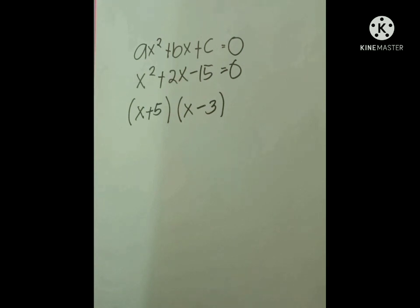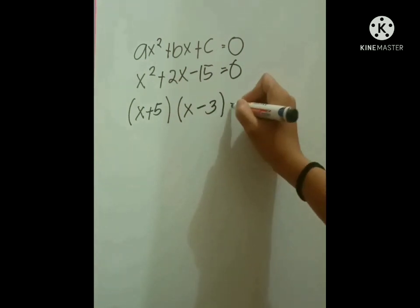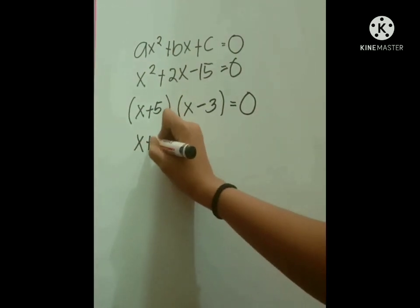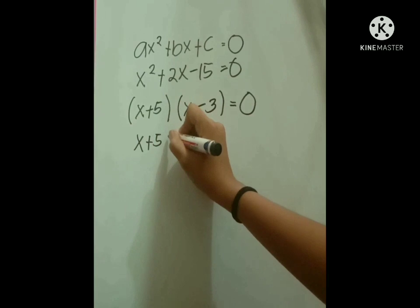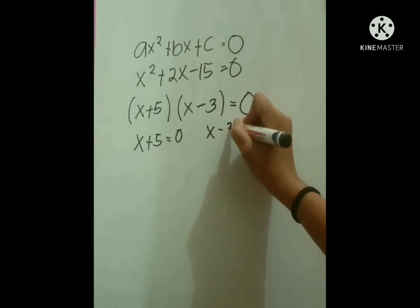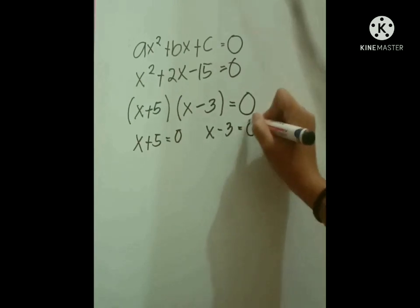And we can also get positive 2 if we add positive 5 and negative 3. And now we have x plus 5 and x minus 3 equals 0. So we have here x plus 5 equals 0 and x minus 3 equals 0.